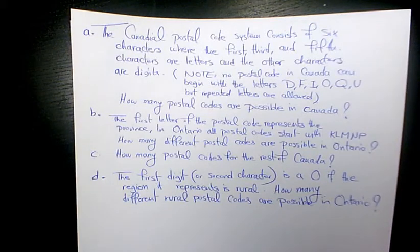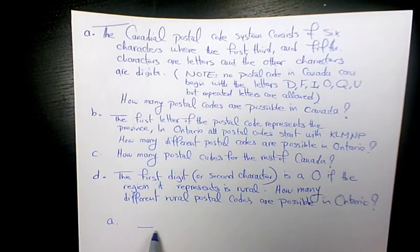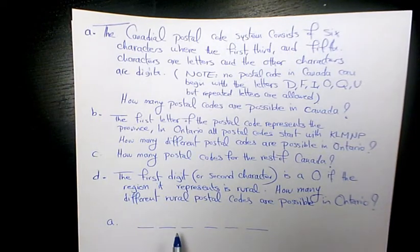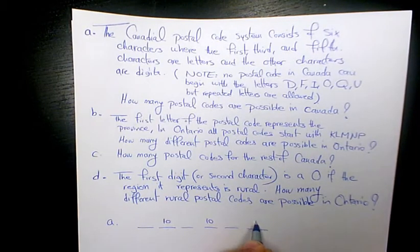We need to find out in the first part how many postal codes are possible in Canada. So we have six characters: second, fourth, and sixth are digits, so it's going to be 10, 10, 10.